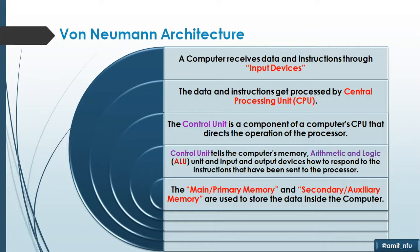The control unit decides which data is to flow which way, when to respond to the input-output devices, and when the data is to be moved into memory. If it is to be processed by the Arithmetic and Logical Unit — arithmetic is for mathematical calculation and logic is for comparison — some data needs to be temporarily stored in registers as well. Registers are within the CPU. All this data flow takes place because of the control unit, which is the main control center of the CPU and the whole computer.